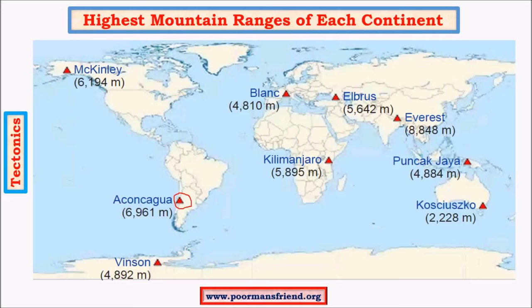Looking at the highest ranges of each continent: Vinson is the highest in Antarctica; Kilimanjaro is the highest in Africa, with Mount Kenya being of significantly similar height but a few meters shorter. In the Australian continent we have Puncak Jaya, which is part of the New Guinea islands and actually part of the Australian continent, though when it comes to country it is part of Indonesia. So this Indonesian island is not part of the Asian continent - it is part of the Australian continent. But in mainland Australia, the highest mountain is Kosciuszko.